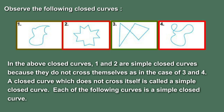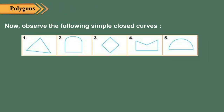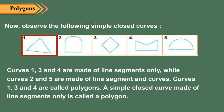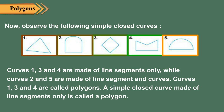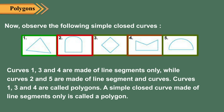A closed curve which does not cross itself is called a simple closed curve. Now observe the following simple closed curves. Curves one, three, and four are made of line segments only, while curves two and five are made of line segments and curves.